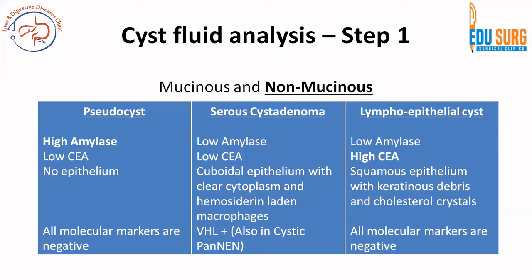In pseudocyst, amylase is high, CEA is low. There is no epithelium - that is why it is known as pseudocyst - and all molecular markers are negative. Among the non-mucinous cystic lesions, the most common is pseudocyst, up to 85%, and the only thing that is positive in a pseudocyst is high amylase.